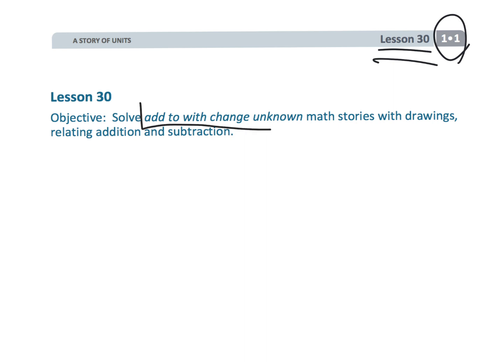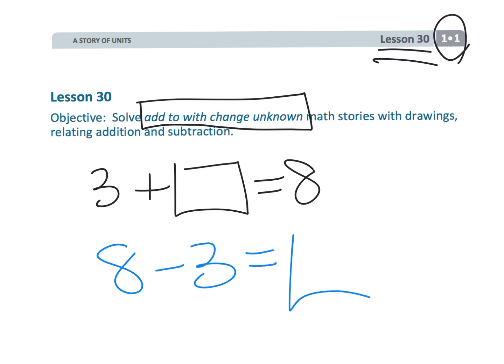and in this lesson we're going to be solving the add to with change unknown math stories. It's a type of subtraction where you have like 3 plus something is equal to 8, and the idea is that problem can be solved with a subtraction problem, like 8 minus 3 gives us that same number.